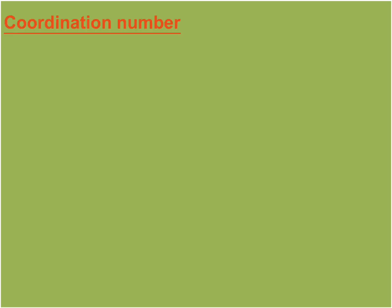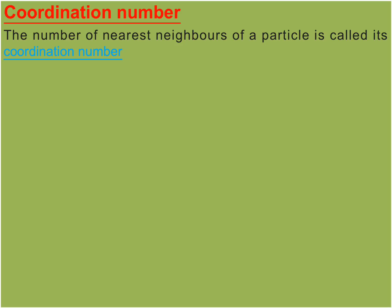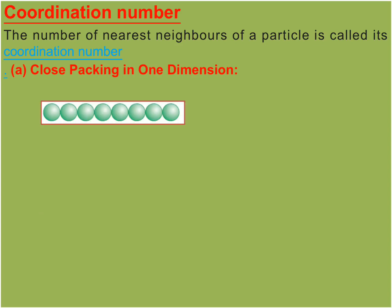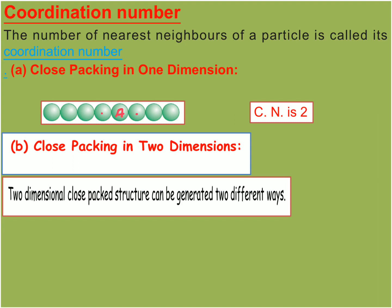In solids, the constituent particles are closely packed and we try to leave the minimum vacant space. During packing, an atom, molecule, or ion can be surrounded by neighboring particles — the number of nearest neighbors of a particle is called the coordination number. In one-dimensional close packing, you can see that atom A is surrounded by two particles, so the coordination number is two.